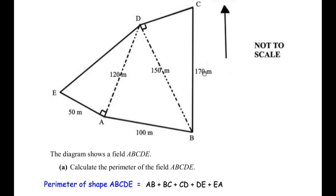Looking at the lengths: AB is given as 100, BC is 170, the lengths of CD and DE are missing, and EA is given as 50. So we have to calculate the lengths of CD and DE. Let us focus on CD first, and for that we are going to consider the right angle triangle BCD.